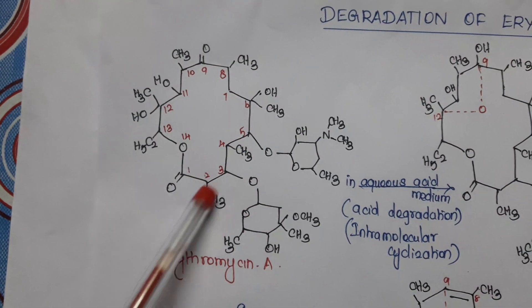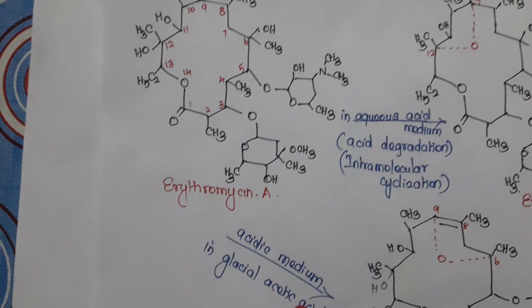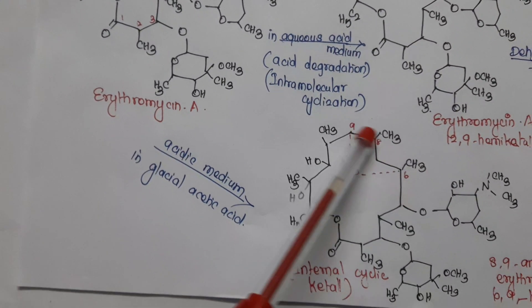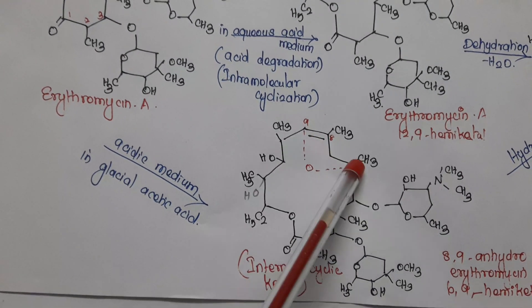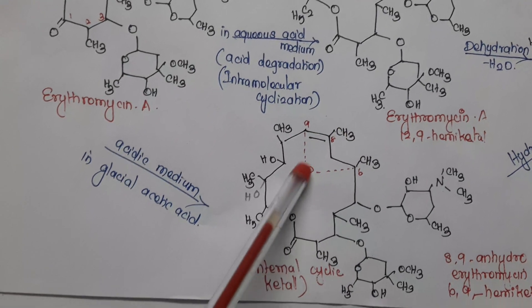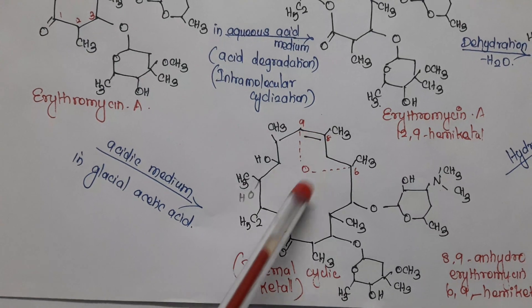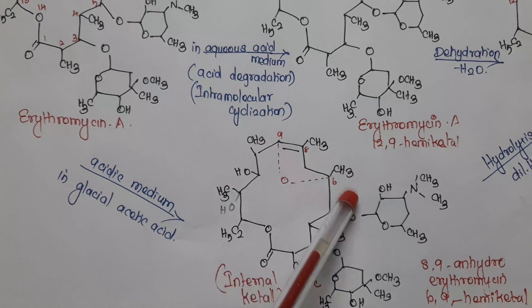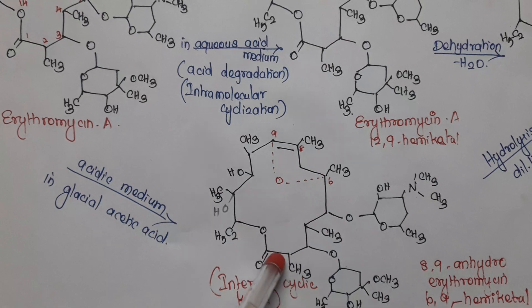Simply in acidic medium — that is, in the presence of glacial acetic acid — there may be formation of a new bond between positions 8 and 9, and the sixth and ninth carbons are connected by means of oxygen. This results in formation of a hemi-ketal and also formation of a double bond. That is why it is called 8-9-anhydroerythromycin 6-9-hemiketal. This is the internal cyclic ketal responsible for GI cramping.